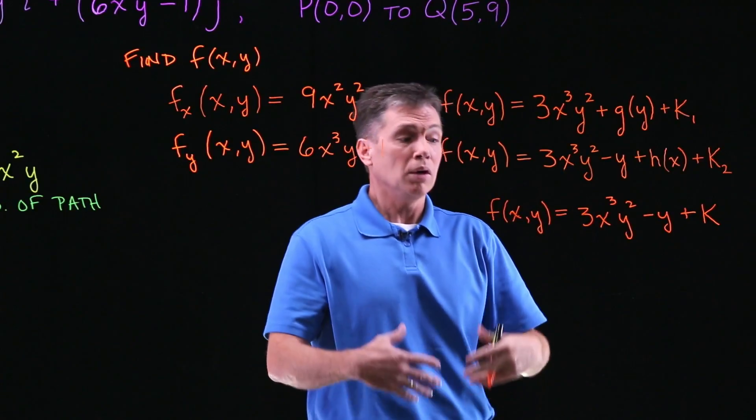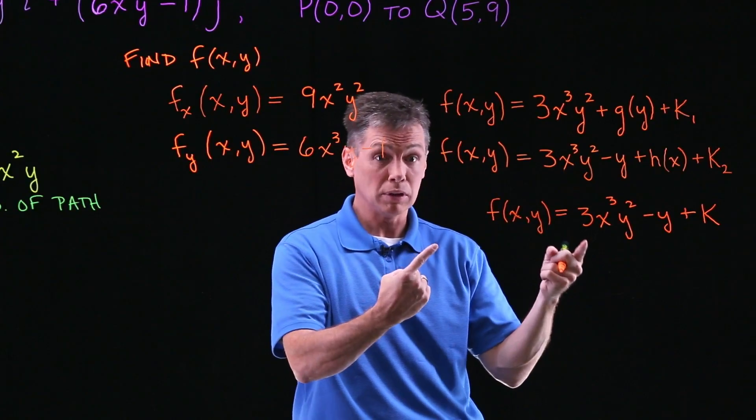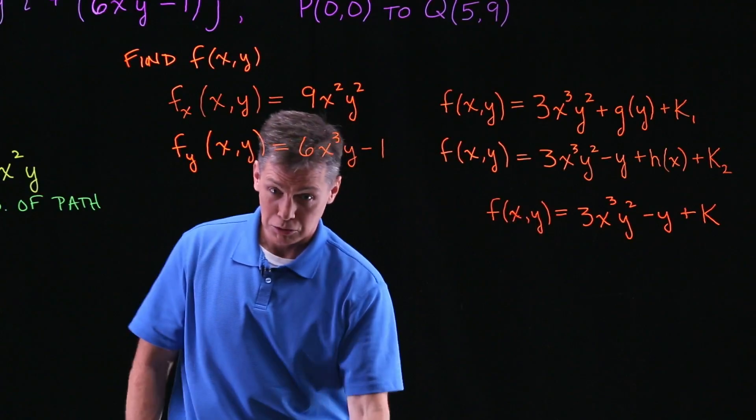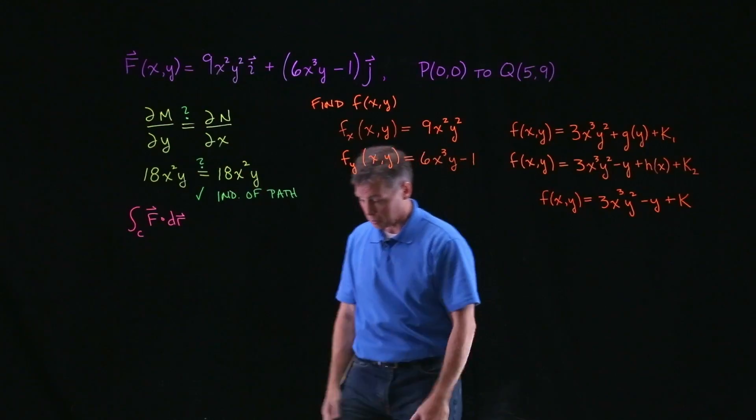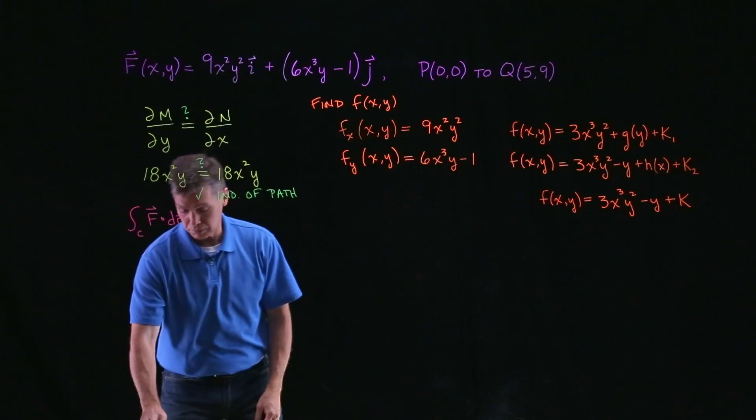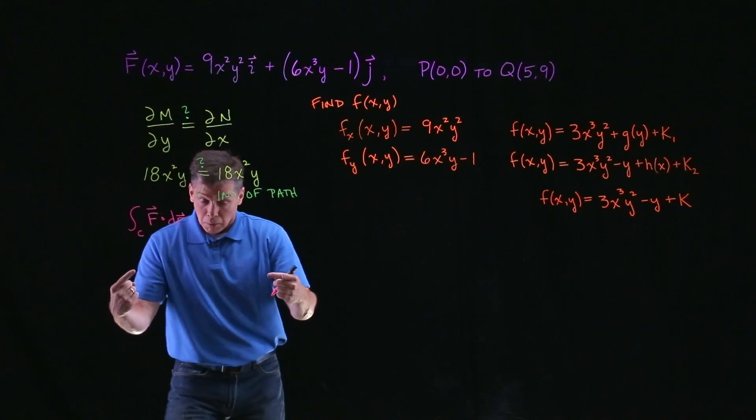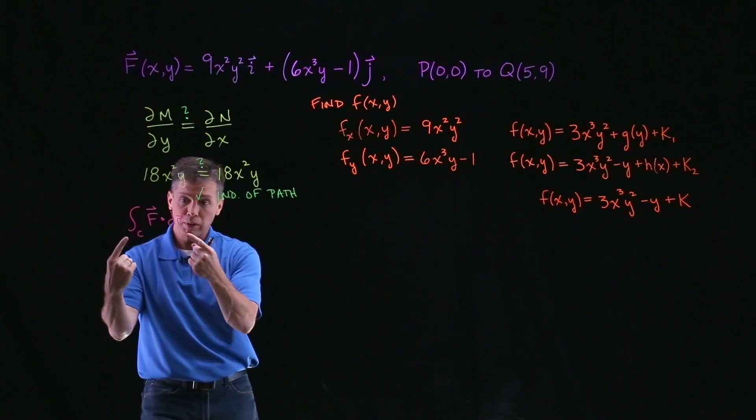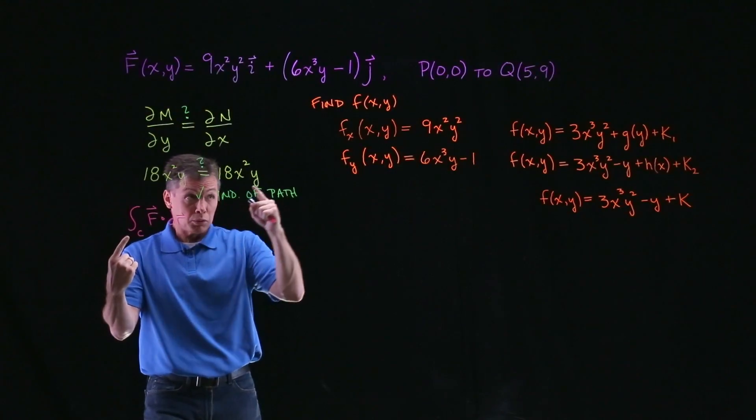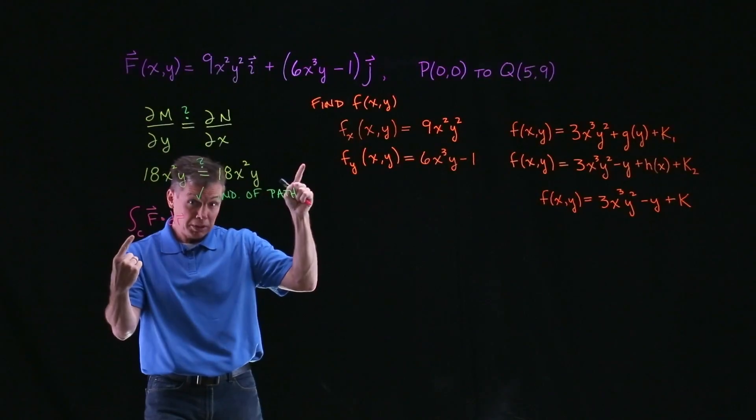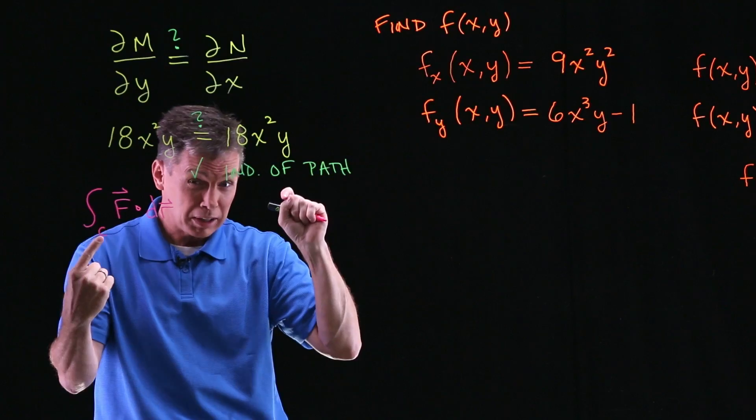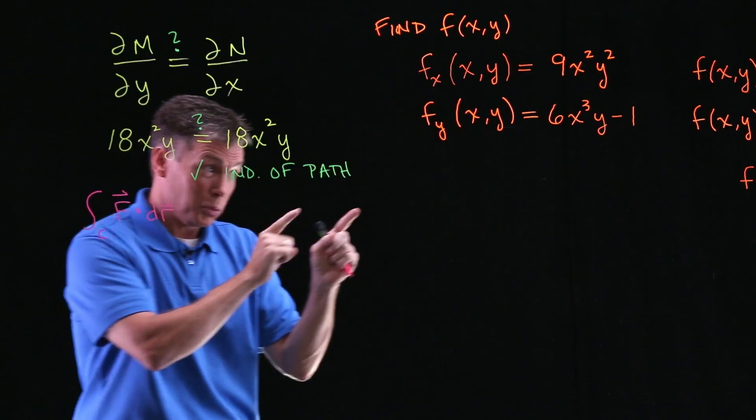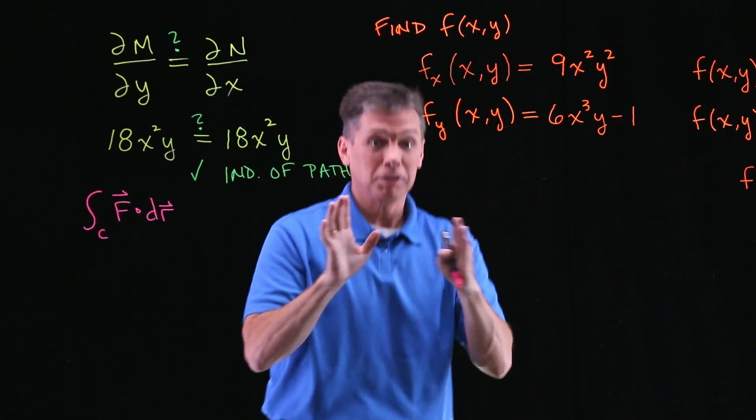You're done, that's little f. What's the point? All right, now let's actually get to our answer to the problem. Come over here and I'll continue in pink, I guess. Continue the problem because the second part said to go ahead and evaluate this integral for an object that moves from P to Q, 0,0 up to 5,9.